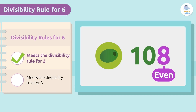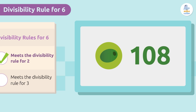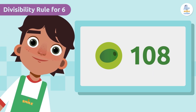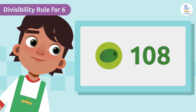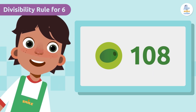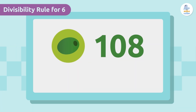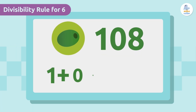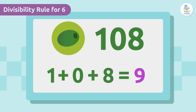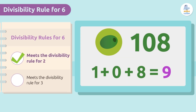Now let's check the rule of three. Do you remember what Connor explained to you? To find out if a number is divisible by three, first we have to add its digits. Our result is nine. Since the number nine is divisible by three, the number 108 is also divisible by three.